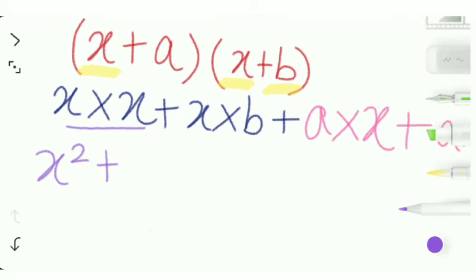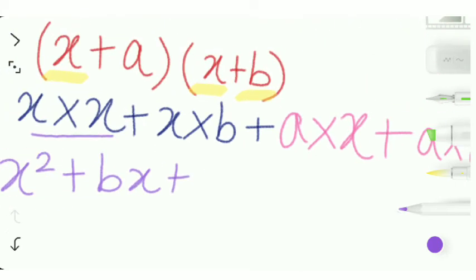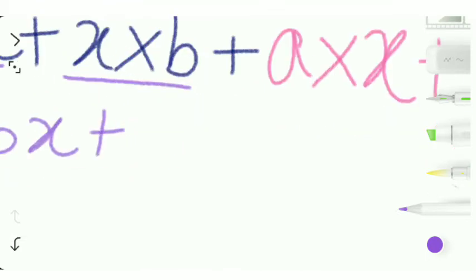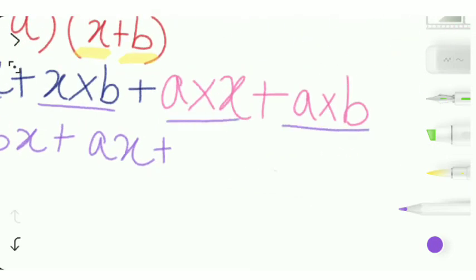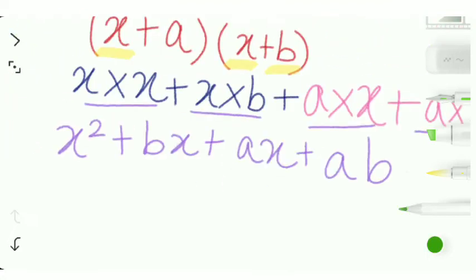Now x multiplied by b, so we can write it as bx. Plus, now we are done with this. Now we are going to do the third one, it is a multiplied by x, we can write that as ax. And then the last one, it is a multiplied by b, ab.